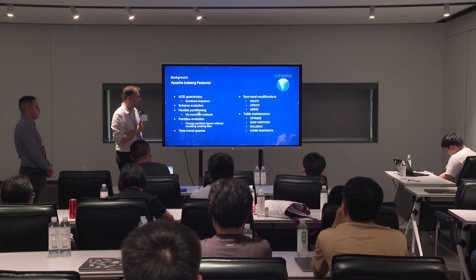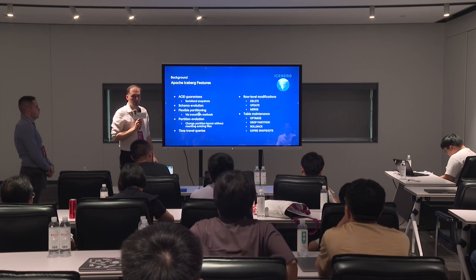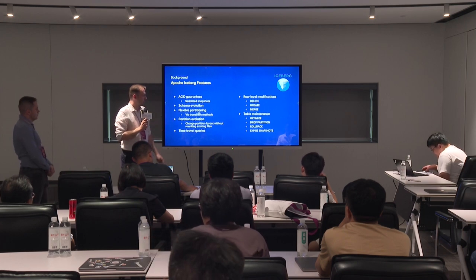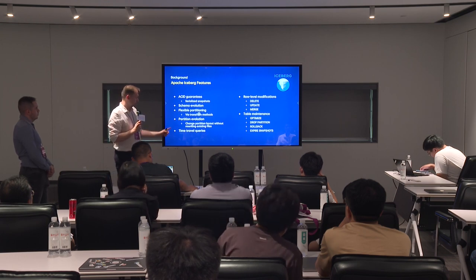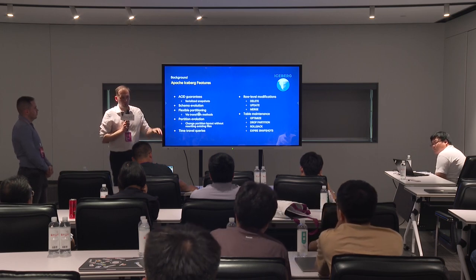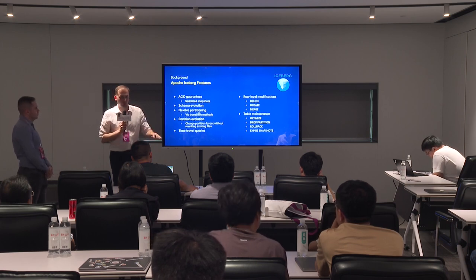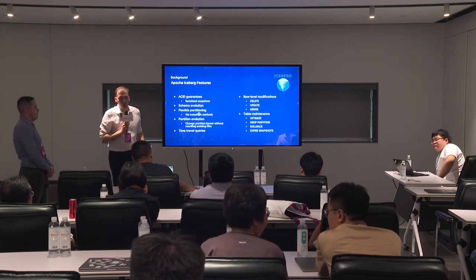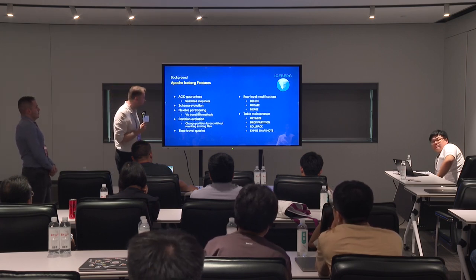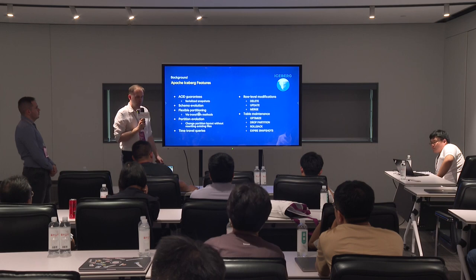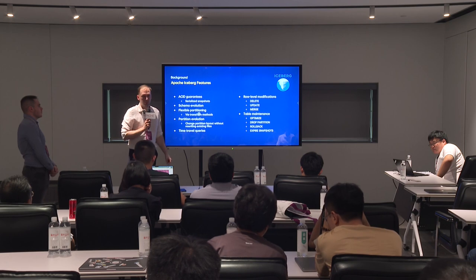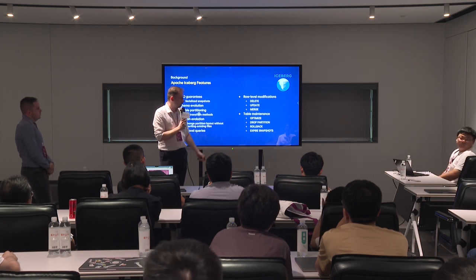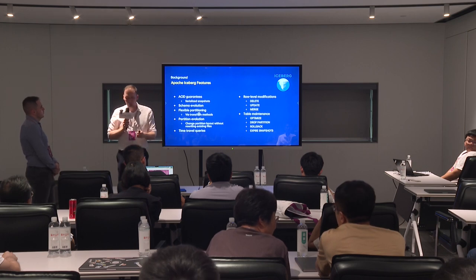Iceberg has quite advanced features thanks to its metadata layer. It provides ACID guarantees with serialized snapshot isolation. Schema evolution is supported — you can add, rename, or reorder columns. Partitioning is very flexible, including hash-based partitioning. Partition evolution is also possible, meaning you can change the partitioning layout without rewriting already-written data files — only new files follow the new partition spec. Time travel queries, rollback, row-level modifications like delete, update, merge, and table maintenance operations like optimize, drop partition, rollback, and expire snapshots are all supported.